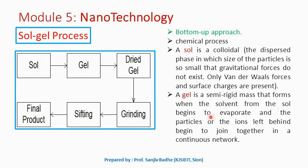When the solvent from the sol is evaporated, what remains behind is a semi-rigid mass. This semi-rigid mass is called a gel. When the solvent is evaporated, the particles or ions left behind begin to join together in the form of a continuous network and form a gel.